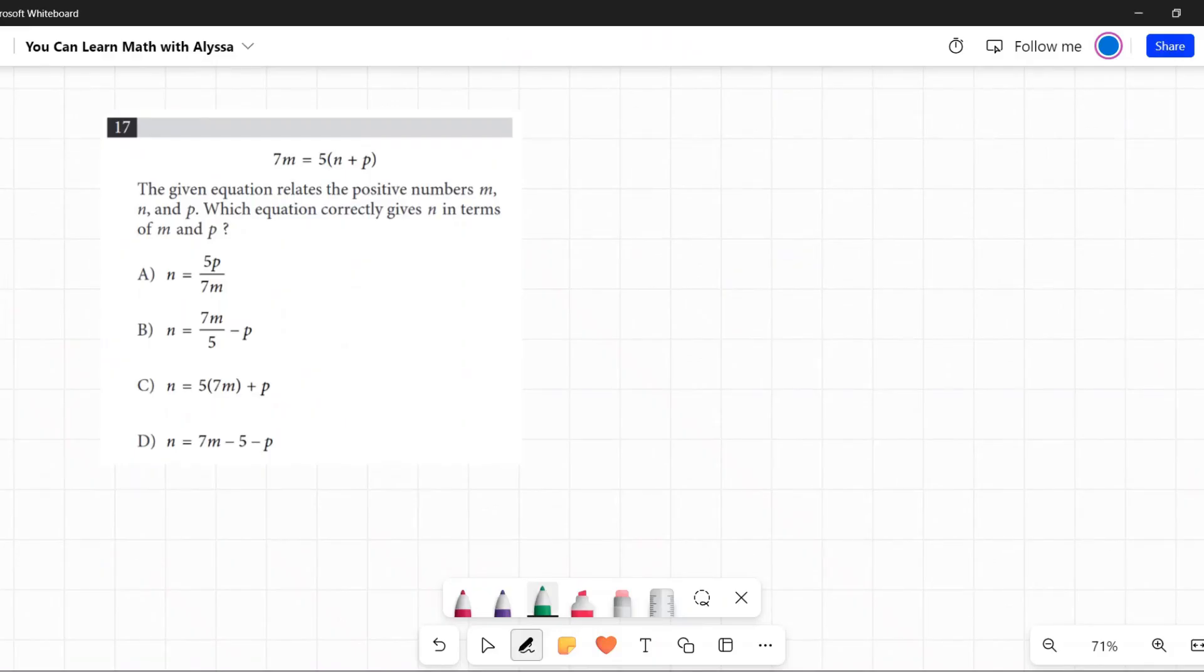7m equals 5 times n plus p. The given equation relates the positive numbers m, n, and p. Which equation correctly gives n in terms of m and p?